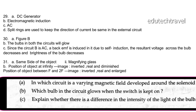In which circuit is a varying magnetic field developed around the solenoid? Circuit B. When the switch is on, the bulb in both circuits glows. Since circuit B is AC, a back EMF is induced due to self-induction. The resultant voltage across the bulb decreases, so the brightness of the bulb decreases.